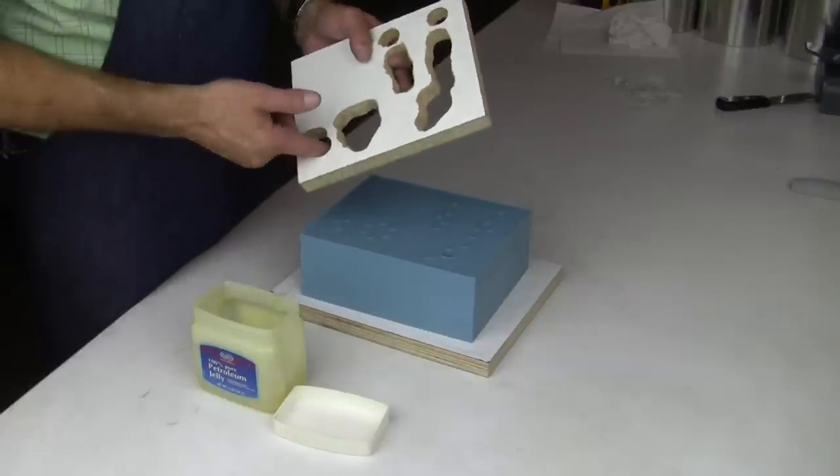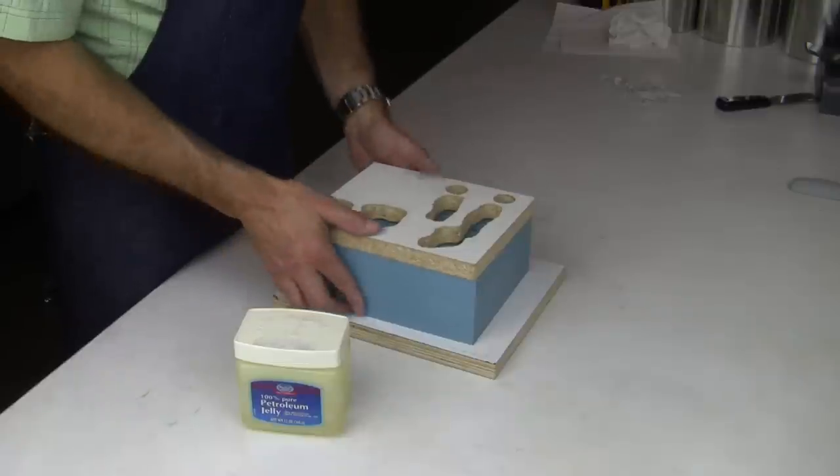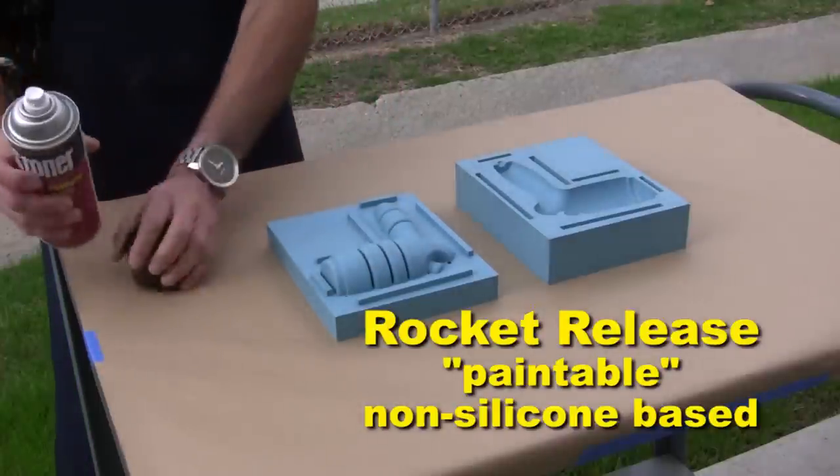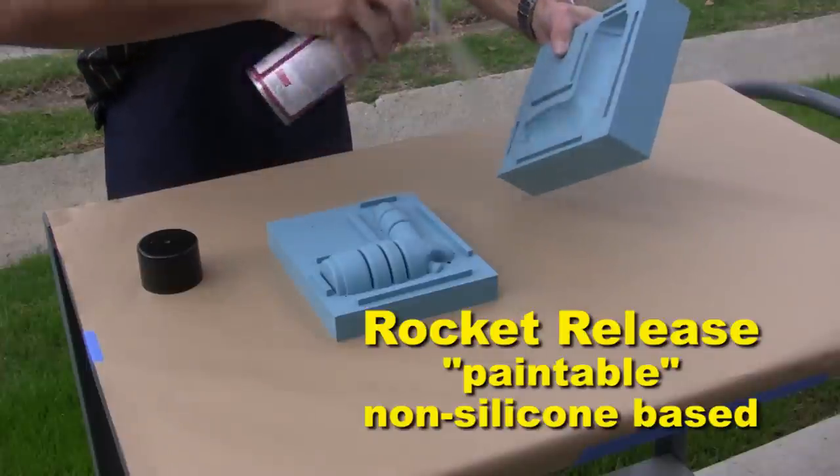Once our mold top is finished, a generous coating of petroleum jelly on the exposed wood prevents overflowed casting material from sticking later. Before we cast into our new mold, we want to apply an appropriate mold release. Rocket release is considered a paintable mold release, meaning any residue transferred to the cast part can be easily washed off later.